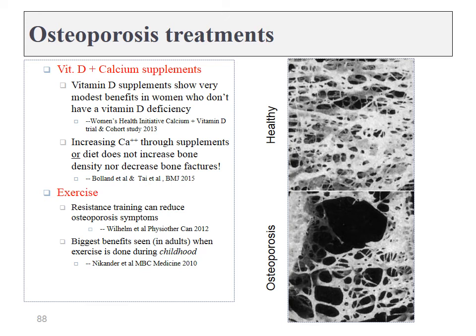Two treatments for osteoporosis include vitamin D and calcium supplements, though as we discussed, the benefits of these are at best modest. A better treatment is exercise. Putting stress on bones tends to increase osteoblast activity and can help to slow down the effects of osteoporosis. The biggest effects of exercise in preventing osteoporosis actually occur in childhood and as young adults. Once the disease has already set in, it's very difficult to reverse, and getting patients to exercise when they have brittle bones is a challenge — so you might prescribe low-intensity workouts such as aqua aerobics.